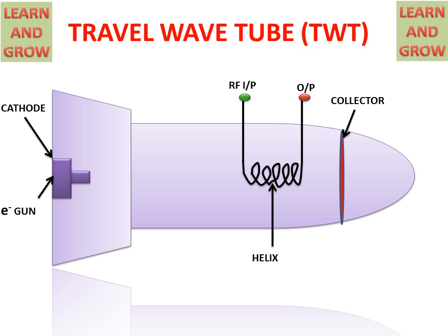RF signal is provided from the input. The RF signal goes through this line and through the helix. It produces an electric field at the center of the helix.